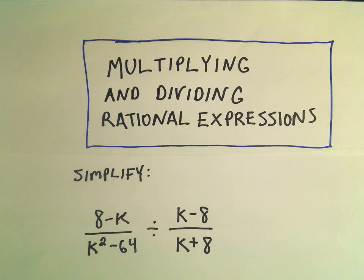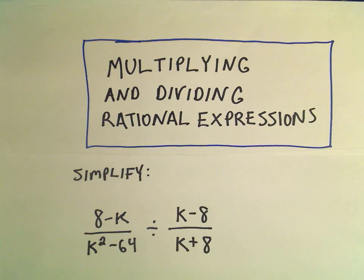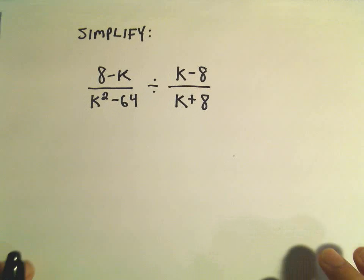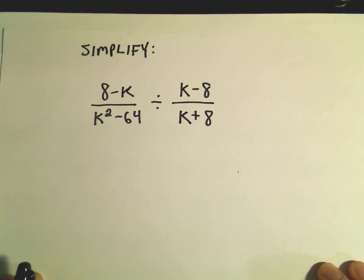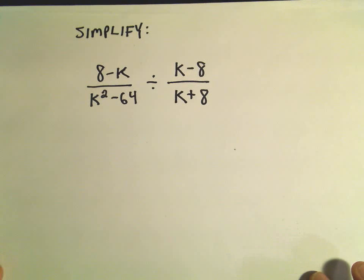In this video I want to do an example of multiplying and dividing rational expressions. We've got a little bit of division of two fractions containing some binomial expressions. The basic idea in this case is to factor and cancel — that's really all it comes down to.